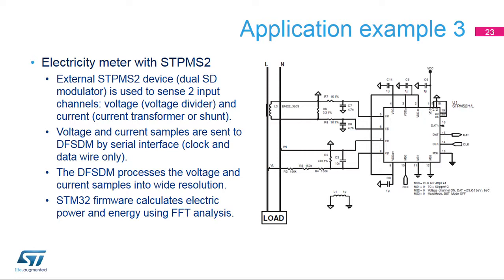The clock is provided by the DF-SDM and can run up to 4 MHz. The DF-SDM then processes the voltage and current channel 1-bit data streams into output data with higher resolution and slower data rate. Finally, the firmware uses FFT analysis to calculate the electric power and energy from the current and voltage samples.